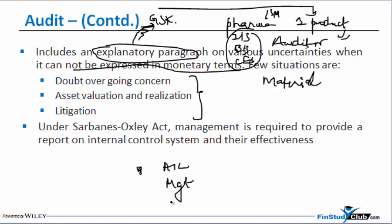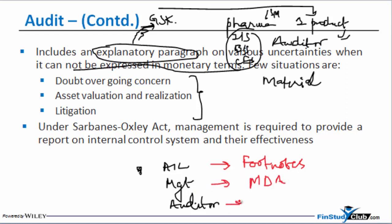That brings me to an important point. A financial statement is a numbers game, but the law gives you adequate opportunity to do descriptive things as well. As an accountant, if I have to tell anything descriptive I use footnotes. As management, if I have to tell something descriptive I use MDA. And as an auditor, if I have to communicate something descriptive, I use an explanatory paragraph. There's a good parallel you can draw here. I hope this small session on audit is clear — I look forward to speaking to you in my forthcoming session. Thank you.